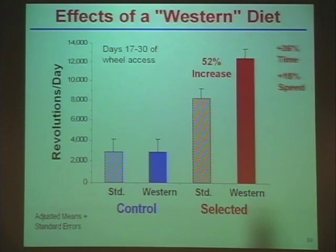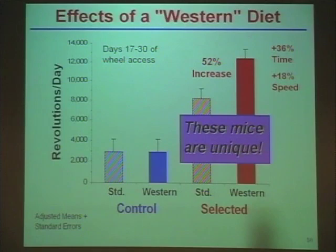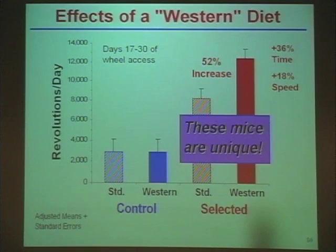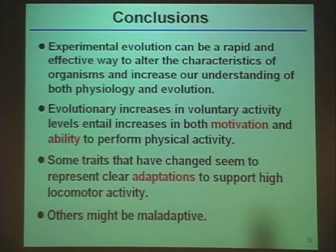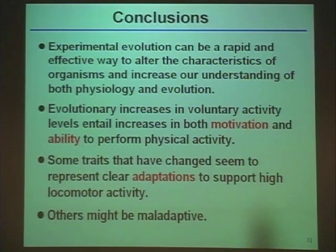The other point is these mice are clearly unique — a regular mouse given high-fat diet gets obese with no effect on activity, but these mice are stimulated to run more. Imagine if we could figure out what's going on: you stop at McDonald's, pig out, get home, and feel compelled to put on your running shoes. To conclude: this experimental evolution approach through selective breeding can rapidly and effectively alter organism characteristics, increasing our understanding of both physiology and evolution. The evolutionary increases in voluntary activity have clearly entailed alterations in brain motivation or reward, as well as alterations in physical abilities for endurance activities.